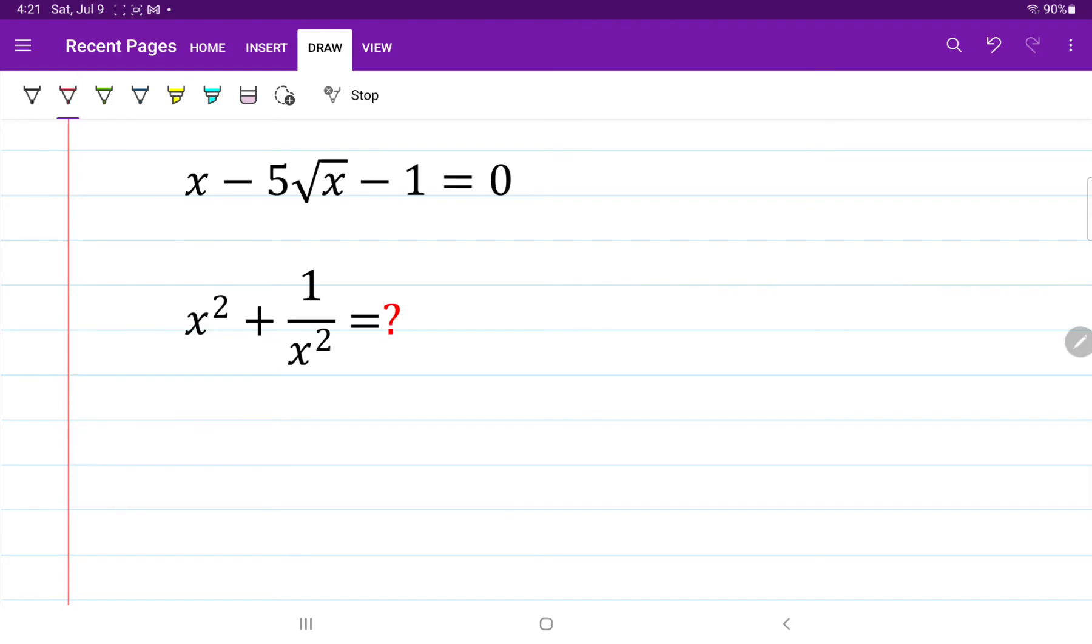we are going to move the part minus 5 square root of x to the right-hand side. So when we do that, we have x minus 1 equals 5 square root of x.